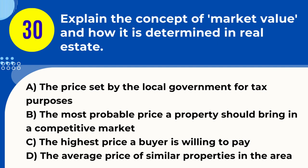Question 30. Explain the concept of market value and how it is determined in real estate. A. The price set by the local government for tax purposes. B. The most probable price a property should bring in a competitive market. C. The highest price a buyer is willing to pay. D. The average price of similar properties in the area. Answer: B. The most probable price a property should bring in a competitive market. Explanation. Market value in real estate is the most likely price that a property should bring in a competitive and open market, considering all conditions pertinent to the sale, such as the willingness of the buyer and seller, and assuming both parties are well informed.